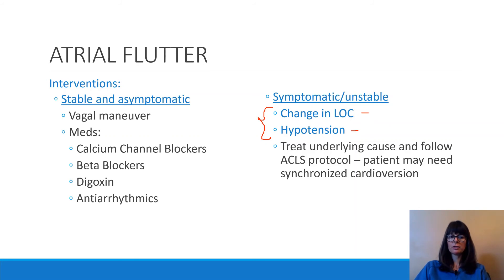If the patient is stable and asymptomatic, we can direct them to perform a vagal maneuver — either hold their breath and bear down, blow into a straw, or blow into their own thumb — which increases intrathoracic pressure and stimulates the vagus nerve, which governs the parasympathetic nervous system.